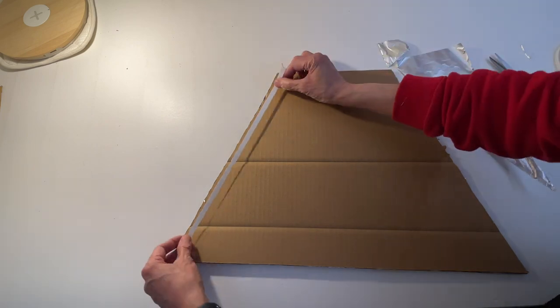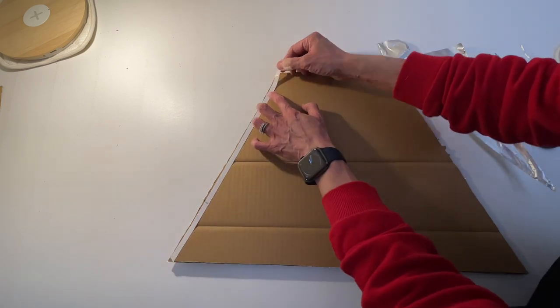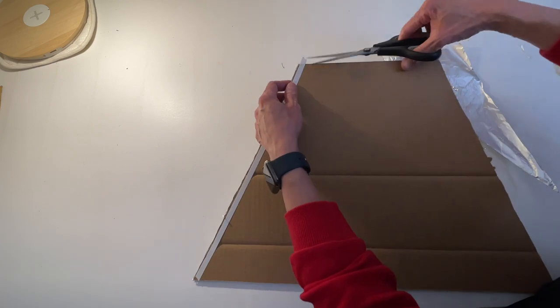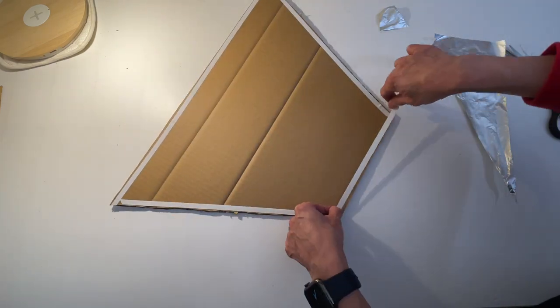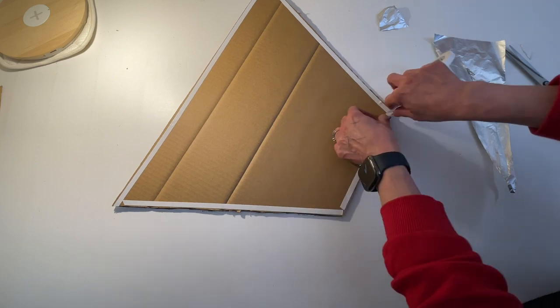On the other side of the panel, I'm going to stick the black paper onto it to cover the cardboard using double-sided tape, so that the softbox will look nicer. But if you don't mind the cardboard, as I mentioned before, you can omit this step.